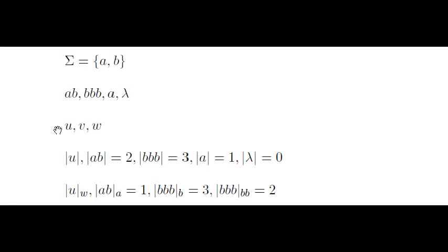We use letters u, v, w with possible subindexes to denote words. In this way we denote the length of a word u. For example, the length of the word ab is 2, the length of bbb is 3, the length of a is 1, and the length of the empty word is 0.